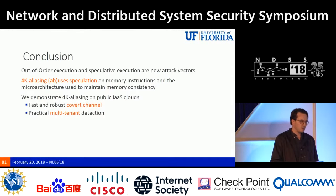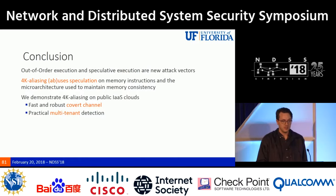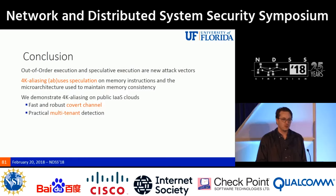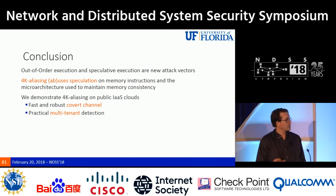In conclusion, we show that the 4K aliasing event — which uses speculation on memory instructions in microarchitecture to maintain memory consistency — is yet another example of how speculative execution is a new attack vector in public cloud environments. We demonstrate this on public IaaS clouds as a fast and robust covert channel, and as a practical multi-tenant detection scheme comparable to cross-core events for detection while achieving better channel capacity than cross-core covert channels.